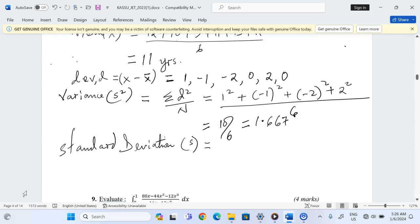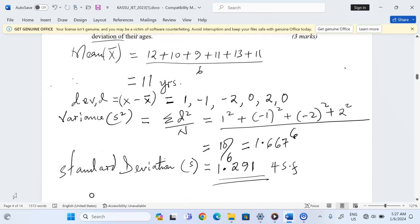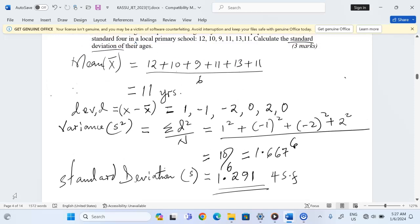1.291 to four significant figures. So this is the standard deviation, which is the square root of variance. Thank you for following. Subscribe and share.